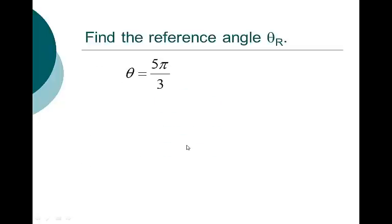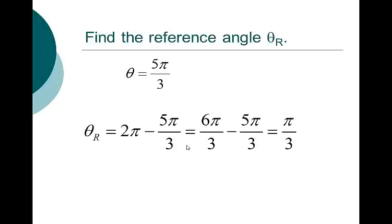Let's go with a radian angle: 5 pi over 3. That's in quadrant 4. So I take 2 pi minus 5 pi over 3. I turn 2 pi into 6 pi over 3, subtract 5 pi over 3, and get pi over 3. If I know the sine, cosine, and tangent of pi over 3, then I know the sine, cosine, and tangent of 5 pi over 3.